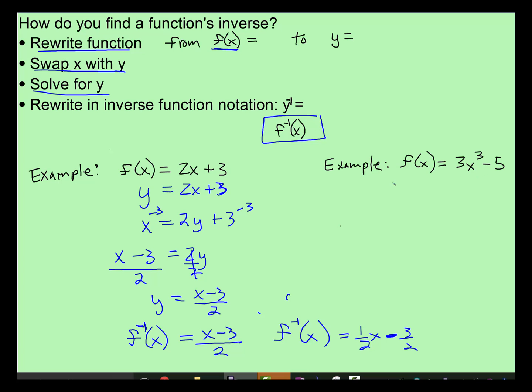So here's another example right here. We're going to rewrite that. Y equals 3x cubed minus 5. Then we're going to swap the x's and y's. Then we're going to solve for y. So we're going to add 5 to both sides. So now we have x plus 5 is equal to 3y cubed.